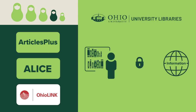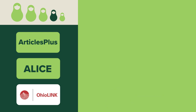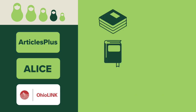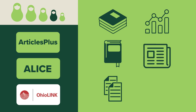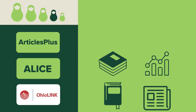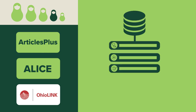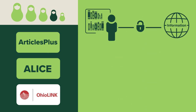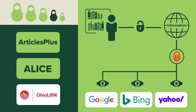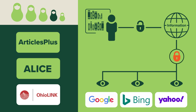Articles Plus, ALICE, and OhioLINK are examples of databases that are designed to help you find resources that the libraries have access to. These resources include books, journals, journal articles, data, newspapers, and government documents. Databases are more structured and do not use search history or personalized algorithms to predict results. Not everything available through the libraries can be found using Google. These resources are often paid for by Ohio University Libraries so users can have access to academic and scholarly information.